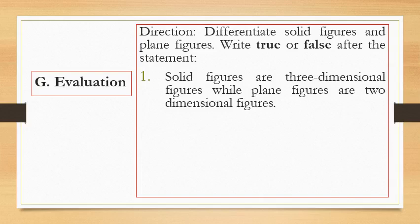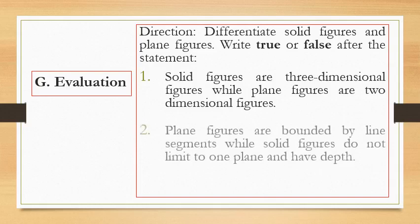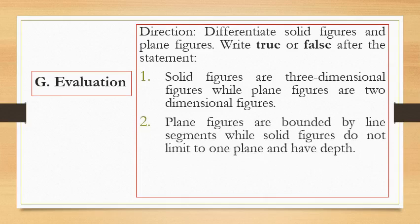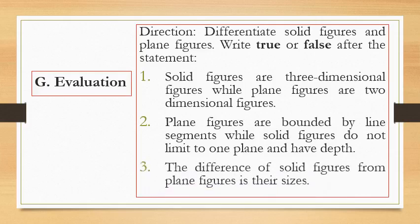If it is false, then they're going to write false after the statement. Then, for number two, plain figures are bounded by line segments while solid figures do not limit to one plane and have depth. For number three, the difference of solid figures from plain figures is their sizes.